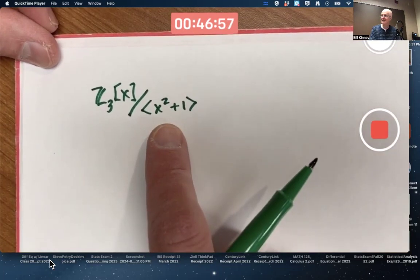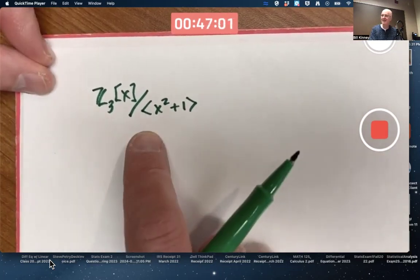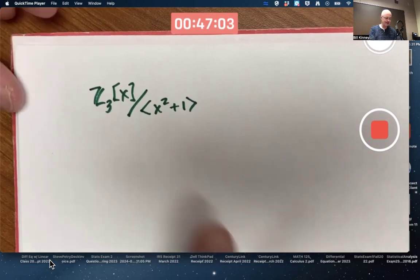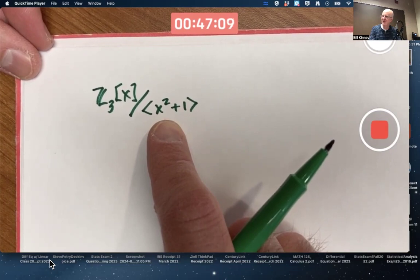It's an ideal by definition, because this is a commutative ring with unity. And think about the notation we're using here. This is all polynomial multiples of x squared plus 1. In other words, another way to think of that is this is every polynomial you can think of that has x squared plus 1 as a factor.